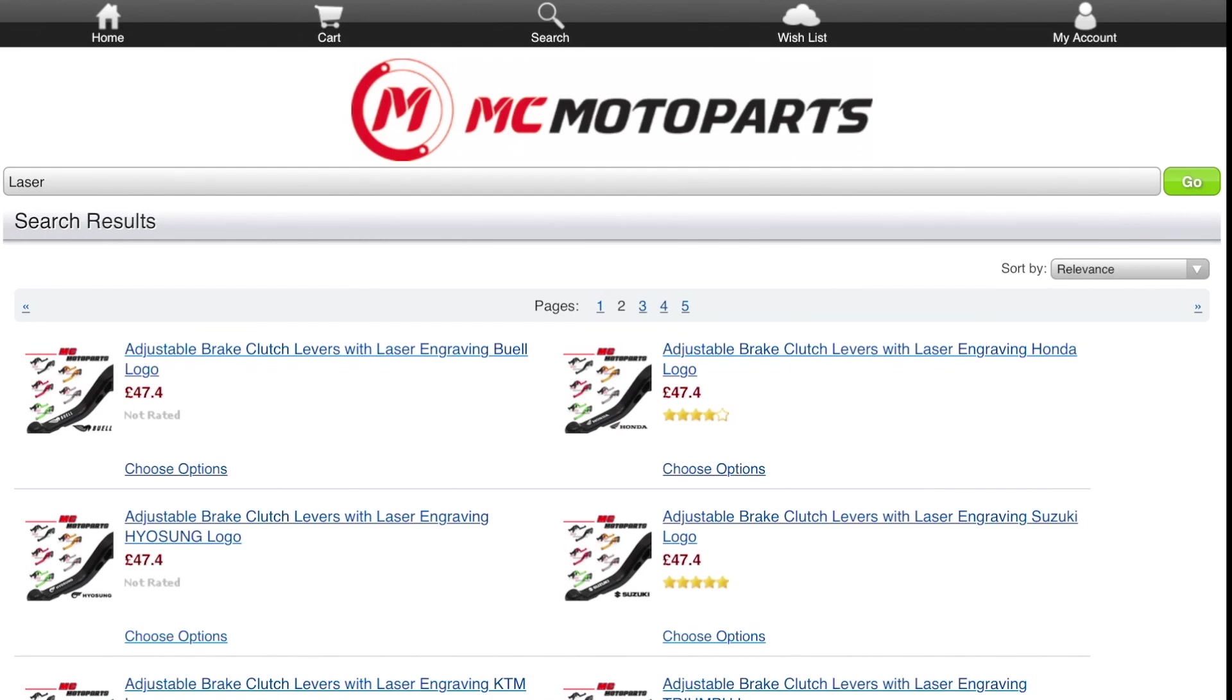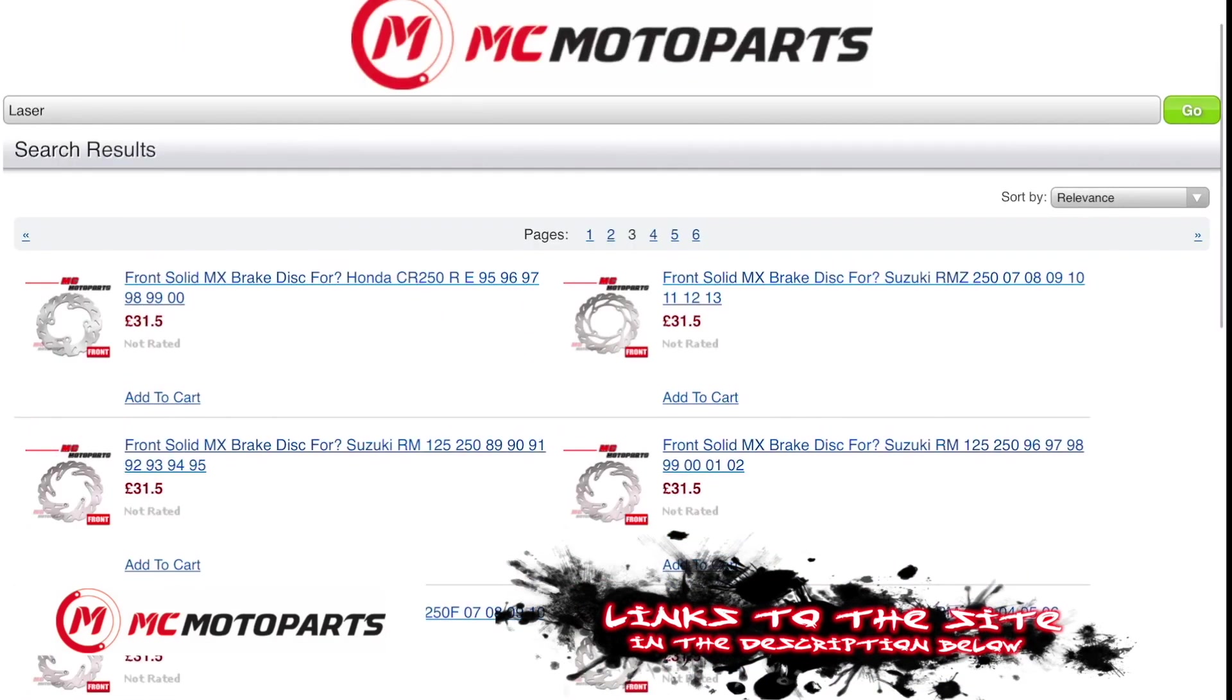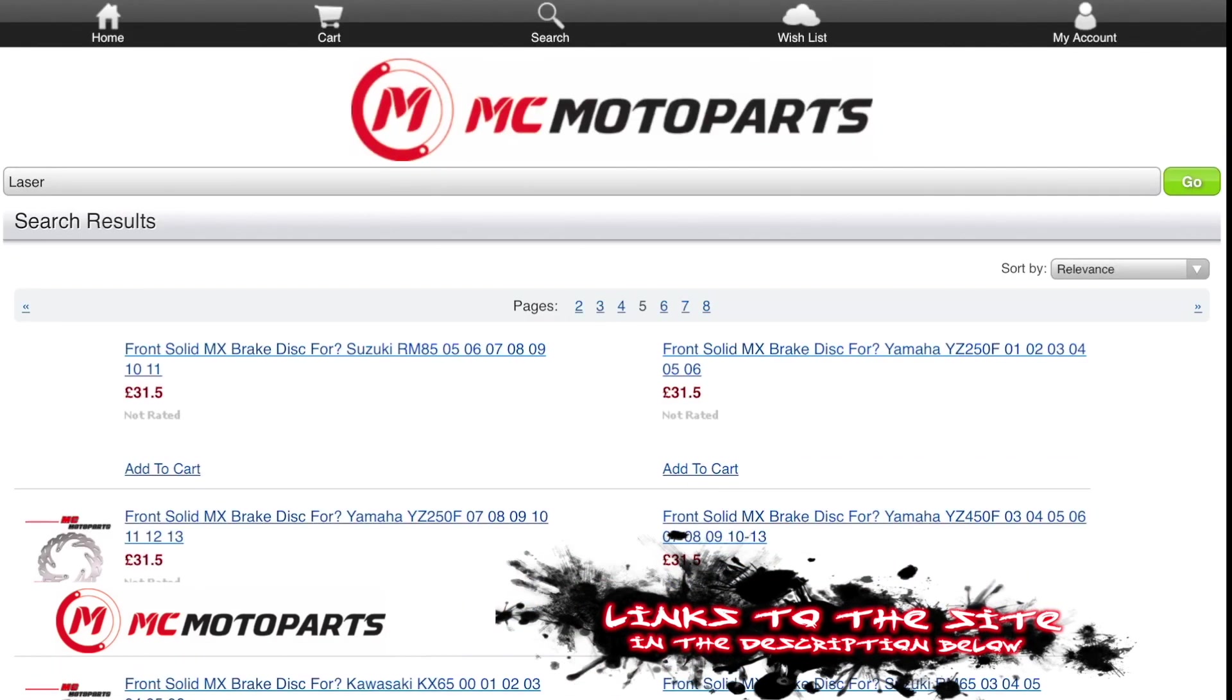There's another company called MC Motor Parts who also do many laser engraved parts, clutch and brake levers, bar ends and mirrors, and so on. They also do a ton of other parts that you could need for a motorcycle.